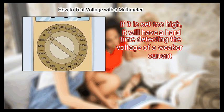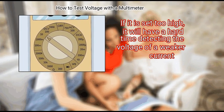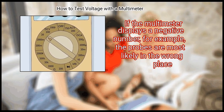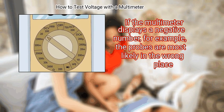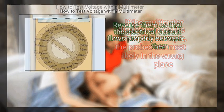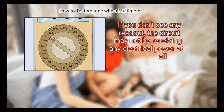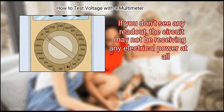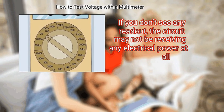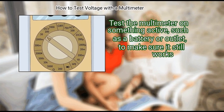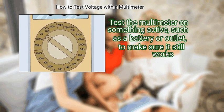The multimeter range has to be set to the correct maximum voltage for the circuit in order to get the most accurate result possible. If it is set too high, it will have a hard time detecting the voltage of a weaker current. If the multimeter displays a negative number, the probes are most likely in the wrong place. Reverse them so that the electrical current flows properly between them. If you don't see any readout, the circuit may not be receiving any electrical power at all. Test the multimeter on something active, such as a battery or outlet, to make sure it still works.